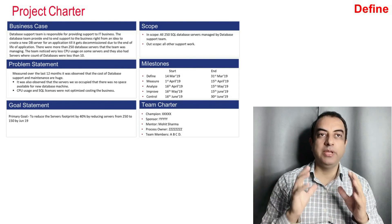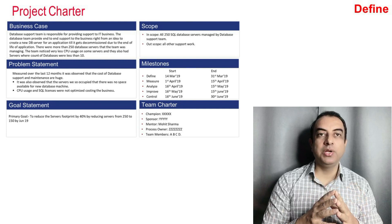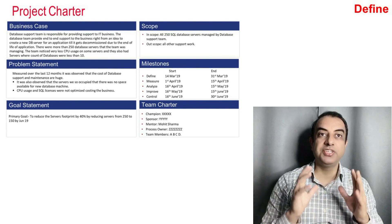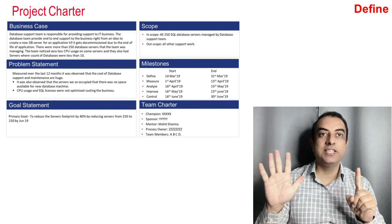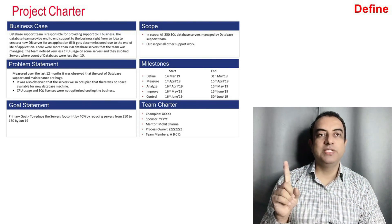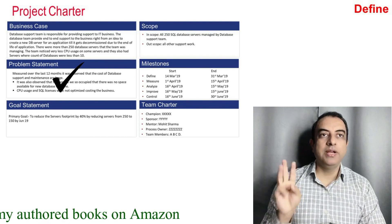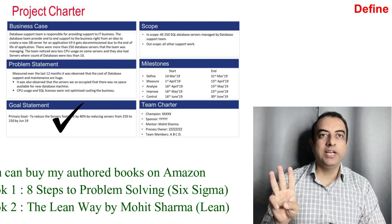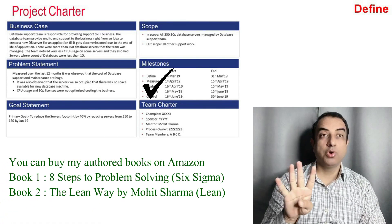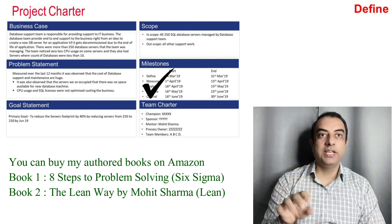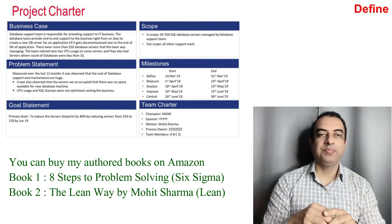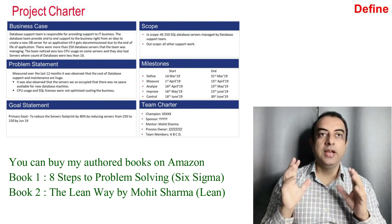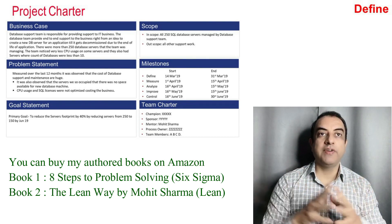In the Define phase of DMAIC methodology, the basic and important tool is the Project Charter. The Project Charter has six elements: number one is business case, problem statement, goal statement, scope of the project, timelines, and the team members.